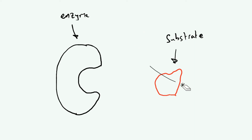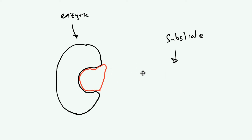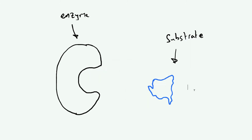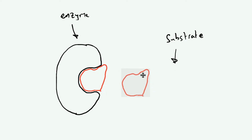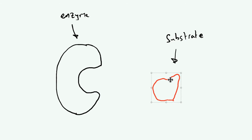The substrate in the cell will be buzzing around and can fit into the active site. Notice how the shape completely fits inside the enzyme. The enzyme can then work and cause the substrate to react, forming a product. That product will leave, the reaction has been catalyzed and sped up by the enzyme. More substrate can then come in and the process repeats itself over and over again. Notice the enzyme hasn't been used up, so it can keep working.